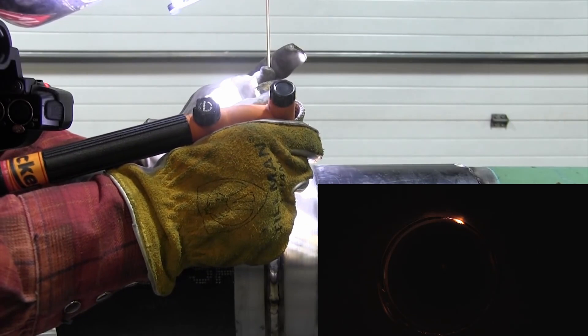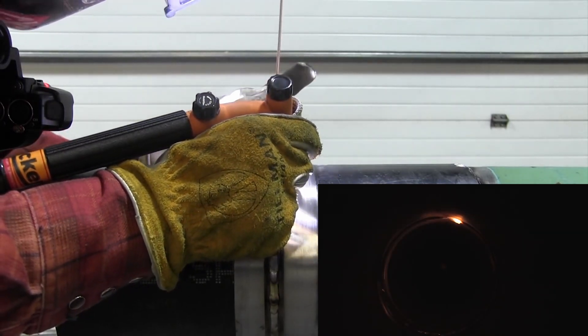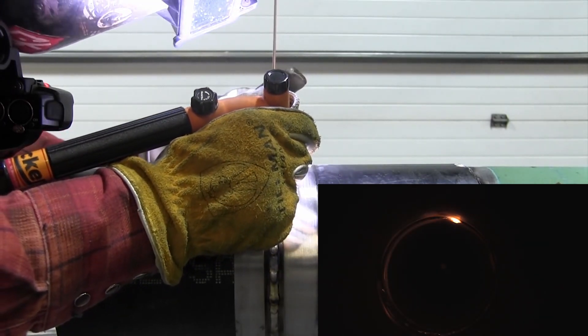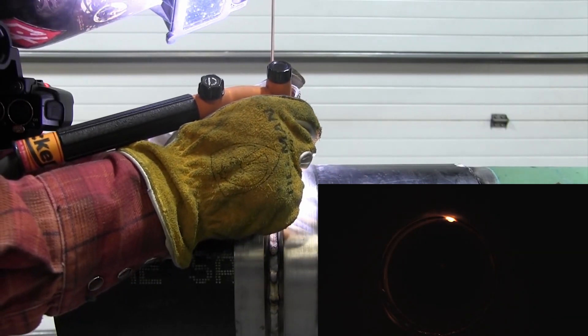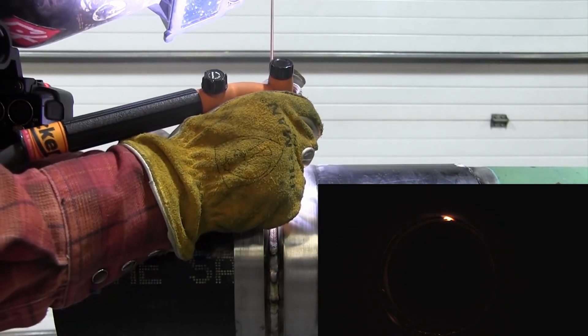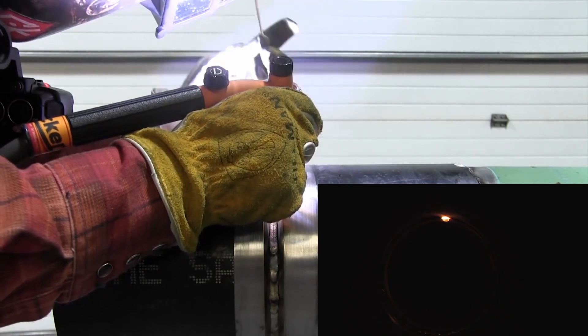For reference I'm running an eighth inch two percent thoriated tungsten and a number 10 cup running a Tektorch rocker with ER70S6 filler metal.